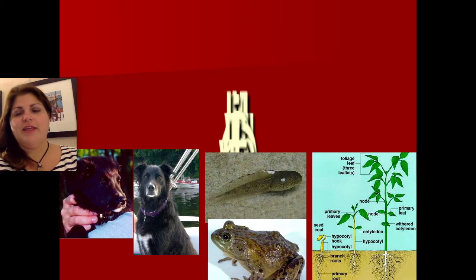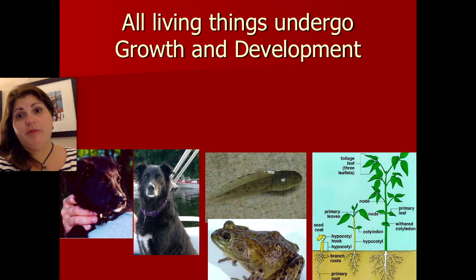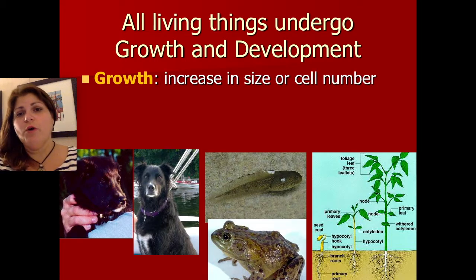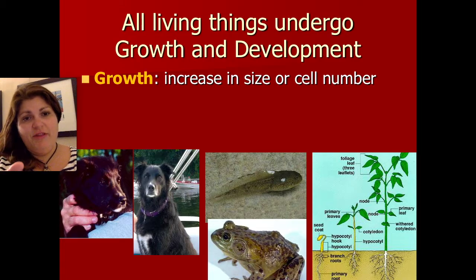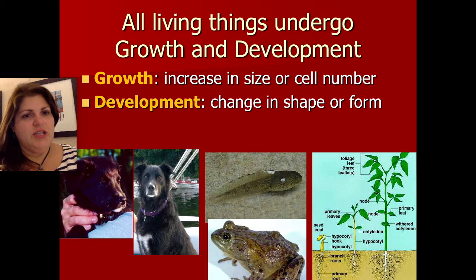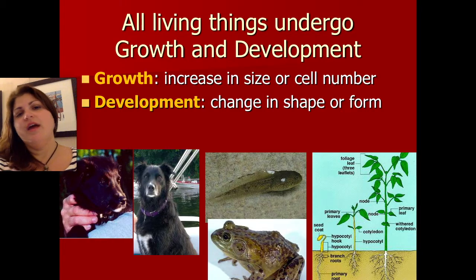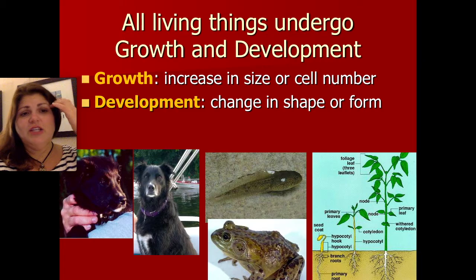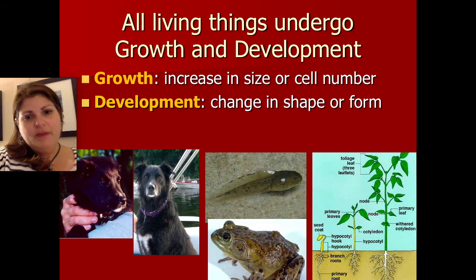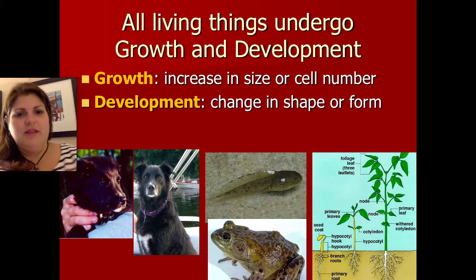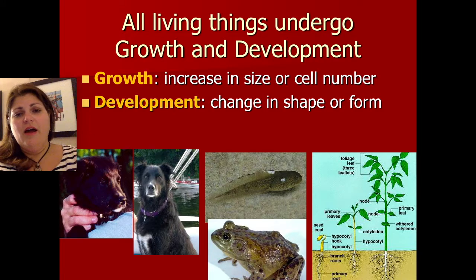Our next characteristic of life is that all living things undergo growth and development. Growth means getting bigger — most organisms get bigger not by having their cells get bigger, but by getting more cells. Development is a little trickier; it means change in shape or form. It's clear that a tadpole has changed as it becomes a frog — that's a pretty profound change. Even with plants, we can see change as they get different kinds of leaves and stems become thicker and sometimes woody. In some animals it's trickier to see, as we go from a puppy to an adult — the snout gets longer, there's more white fur, and even behavioral changes would be a type of development.